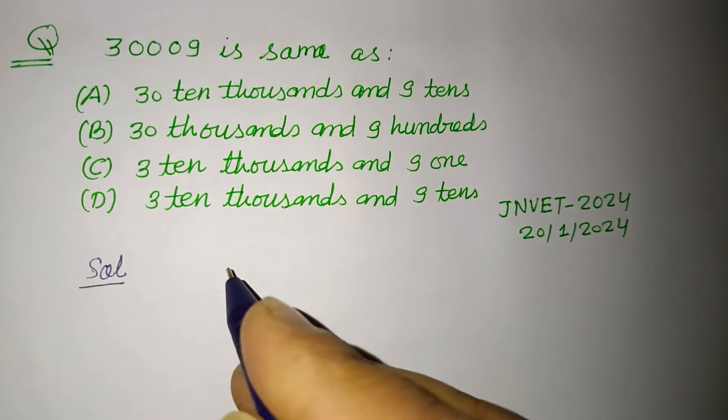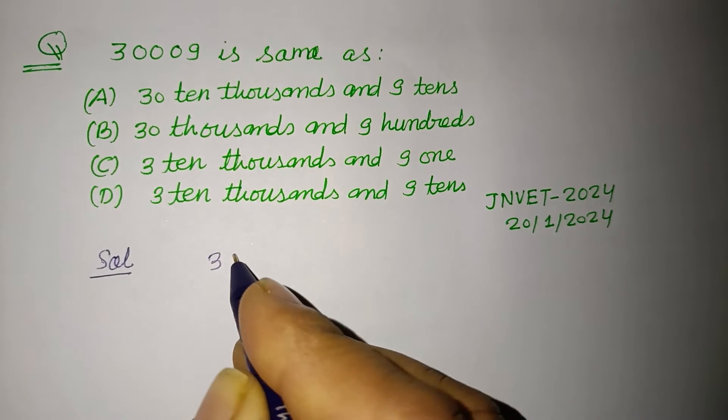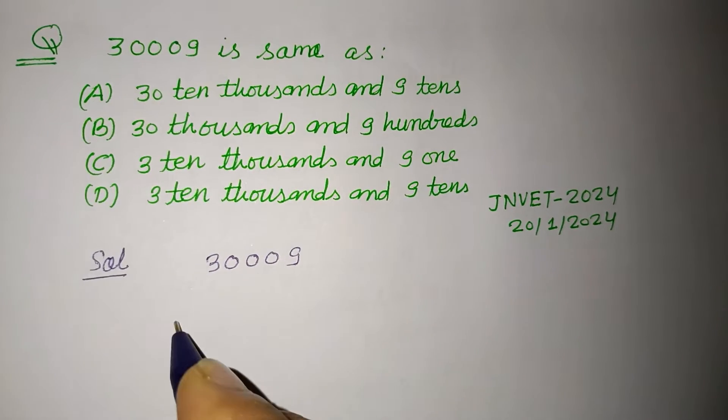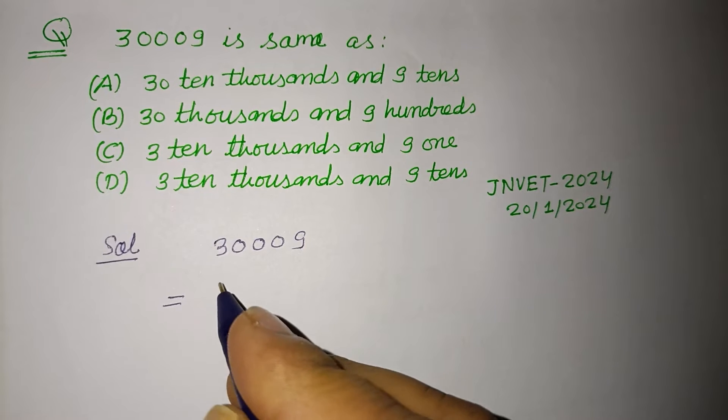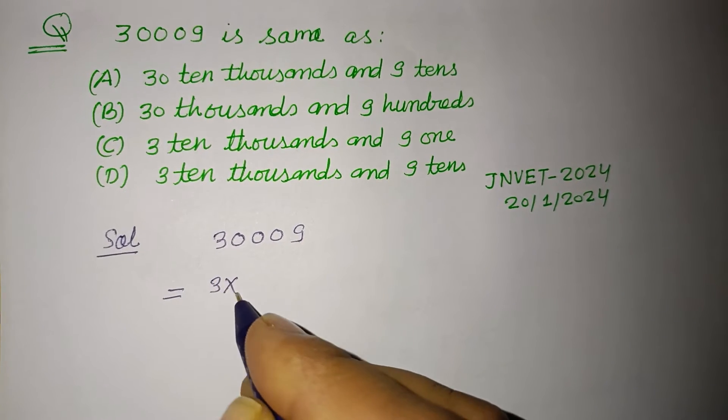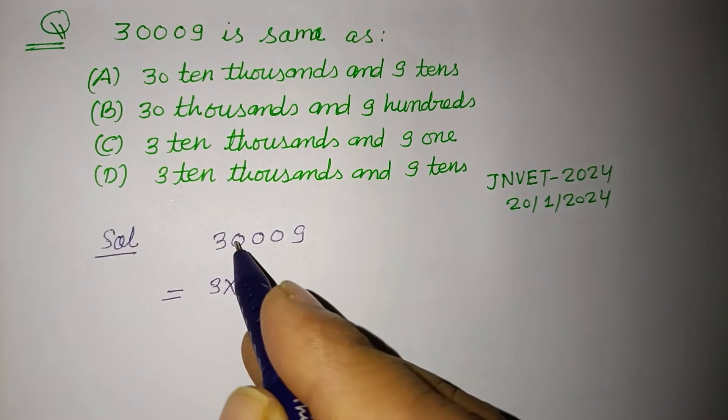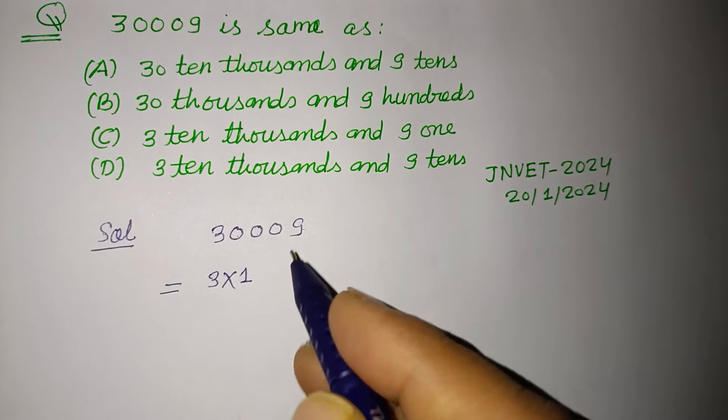So student, first we expand the given number 30009, taking their place value. So 3 into 1, after 3 there are 1, 2, 3, 4 digits.